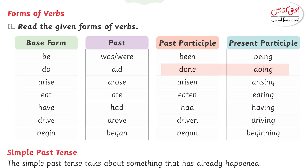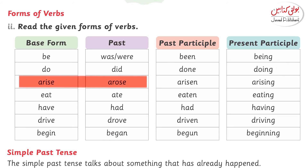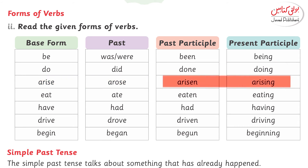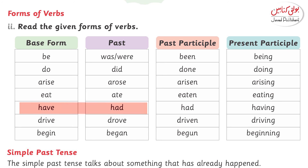Past — guzra hua. Past participle — guzra hua zamana. Present — jo abhi ho raha hai. Arise, arose, arisen, arising. Eat, ate, eaten, eating. Have, had, had, having.